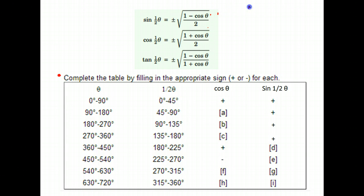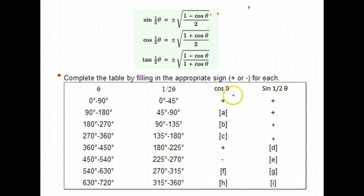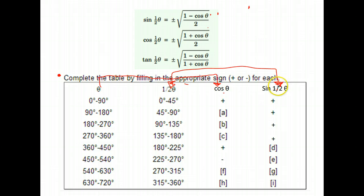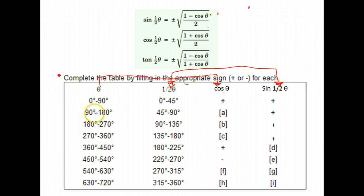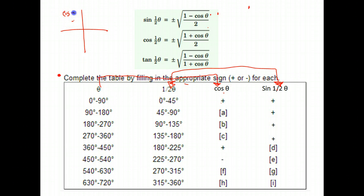So let's take a look. If theta is between 0 and 90, half of that would be in the range between 0 and 45. The values we have here are cosine and the sine of one half theta. For the cosine, you want to look at the range for the full theta. For the sine, you want to look at the half-theta range since it's the sine of half of the angle. In the first quadrant, between 0 and 90, cosine is positive. Between 90 and 180, we're in the second quadrant, and cosine is negative there.